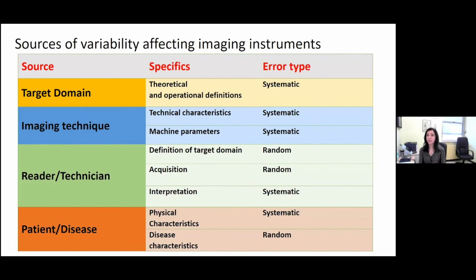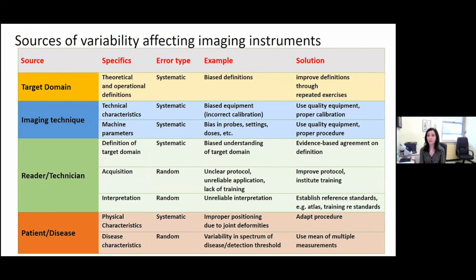All of these specific sources of variability can be defined in the form of error. Here you can see the list of systematic and random errors according to the source of variability. This table provides examples of errors and possible sources of variability affecting imaging instruments, as well as some solutions. For example, in the target domain, the use of a wrong theoretical operational definition may affect the way the target domain is studied, and the solution is to improve the definition through repeated exercises.